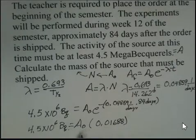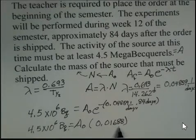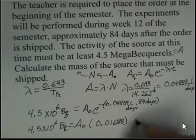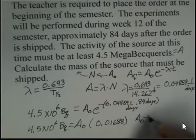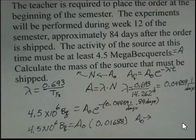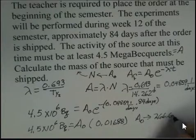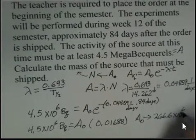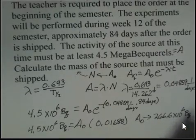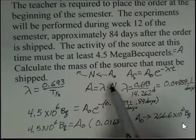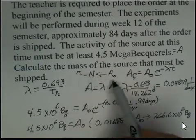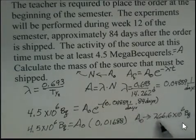So we have the means now to calculate A sub naught. We're going to divide both sides by 0.01688 and recover then that the initial activity needs to be 266.6 times 10 to the 6 becquerel. So we've accomplished part of this string of calculations required. We have the value of A0.